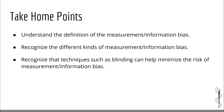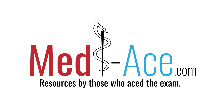Here are the take-home points for this chapter: Understand the definition of the measurement/information bias. Recognize the different kinds of measurement/information bias. Recognize that techniques such as blinding can help minimize the risk of measurement/information bias. Thank you for watching and see you in the next chapter.